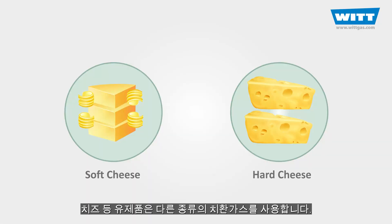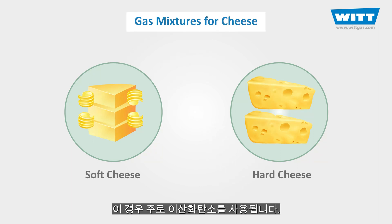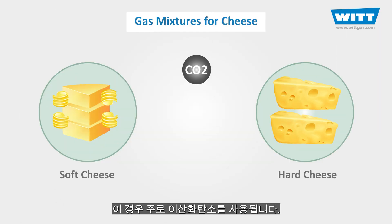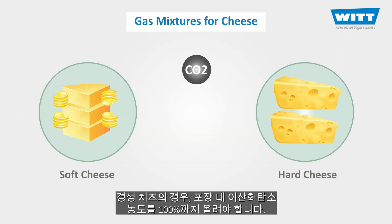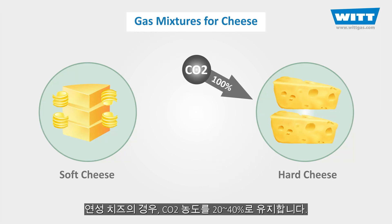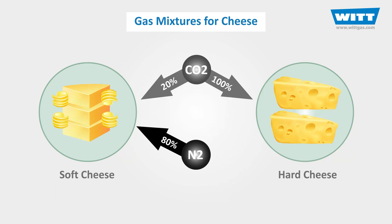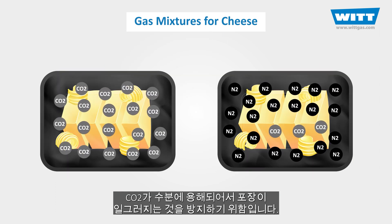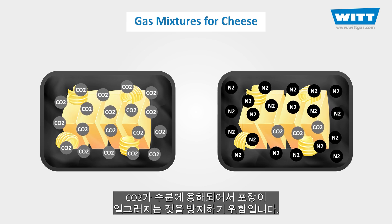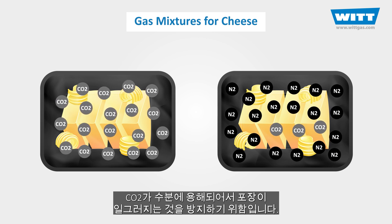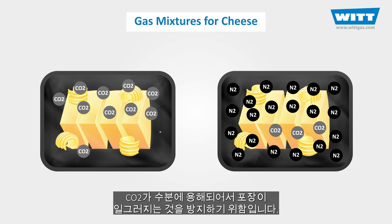In the packaging of some other types of foods such as cheese, the gas mixture is completely different. In this case carbon dioxide is used first and foremost. The CO2 level in hard cheese packages is up to 100%, and for soft cheeses the level is usually restricted to 20–40%. The reason for this is to prevent the package from collapsing under atmospheric pressure as the carbon dioxide dissolves into the water content.